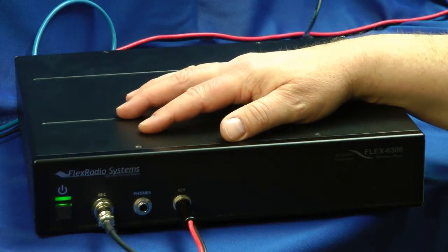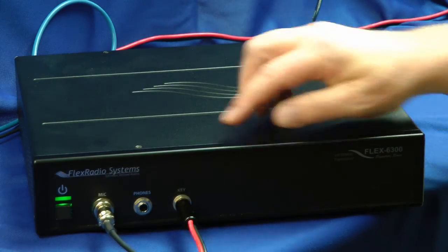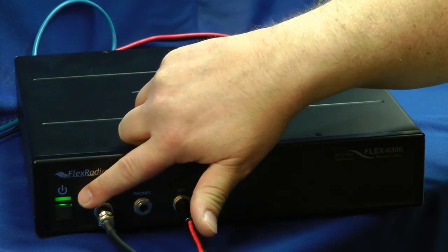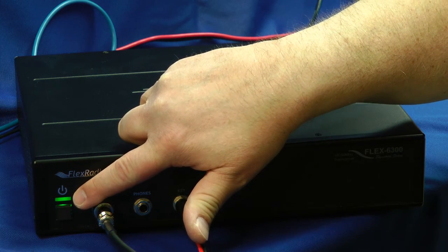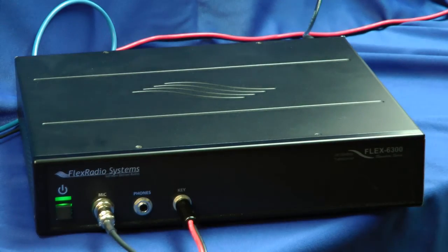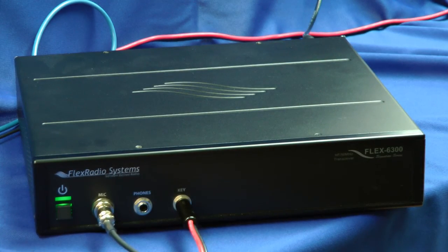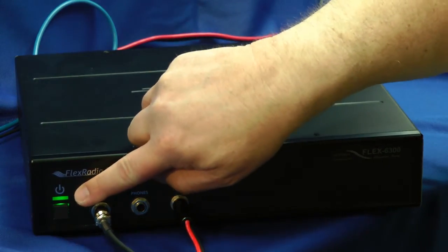Alright, here it is, the FlexRadio 6300. This is the front panel. Not much to see here. This is the power button on-off, but this LED is multi-color. It lights up during different conditions. If you're updating the software, it'll be a different color. It'll flash red if I key the microphone. That tells me I'm transmitting. And a whole variety of different functions can be seen just with this LED.